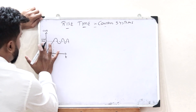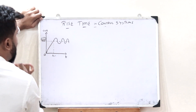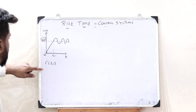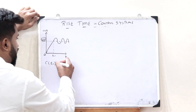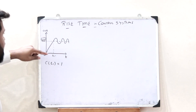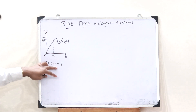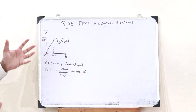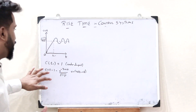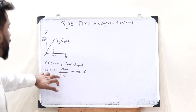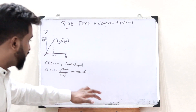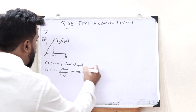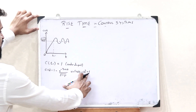Let the response of this particular control system at 100% be taken as C of T_R, where T_R is the rise time. Now let us assume the value at the rise time at 100% is equal to 1, because at the rise time it is 100%. So let C of T_R be equal to 1 in the case of an underdamped control system.